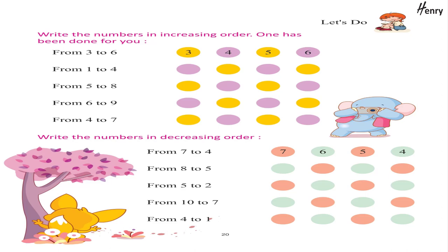Let's do: write the numbers in increasing order — one has been done for you. From three to six: three, four, five, six. Write the numbers in decreasing order: from seven to four — seven, six, five, four.